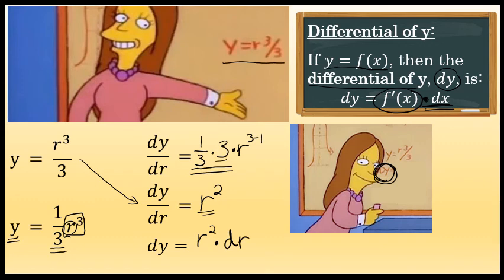To finish this joke, I'm going to do a little bit of rewriting here. Instead of writing R to the second times D-R, I'm going to rewrite R squared as R times R times D-R. And then, one more thing, since multiplication is commutative and I have three factors here, I'll take one of the factors of R and move it to the end. So instead of writing R times R times D-R, I'll write R times D-R times R, or more briefly, R-D-R-R.